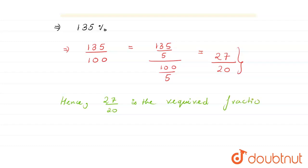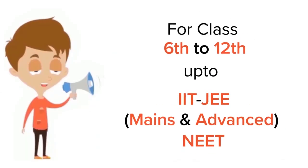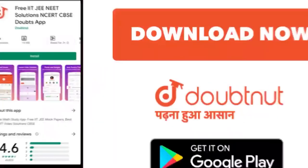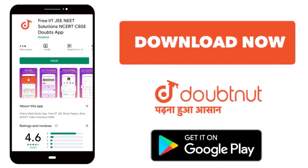So 27 by 20 is the final answer. For class 6 to 12, IIT JEE and NEET level, trusted by more than 5 crore students — download the DoubtNut app today.